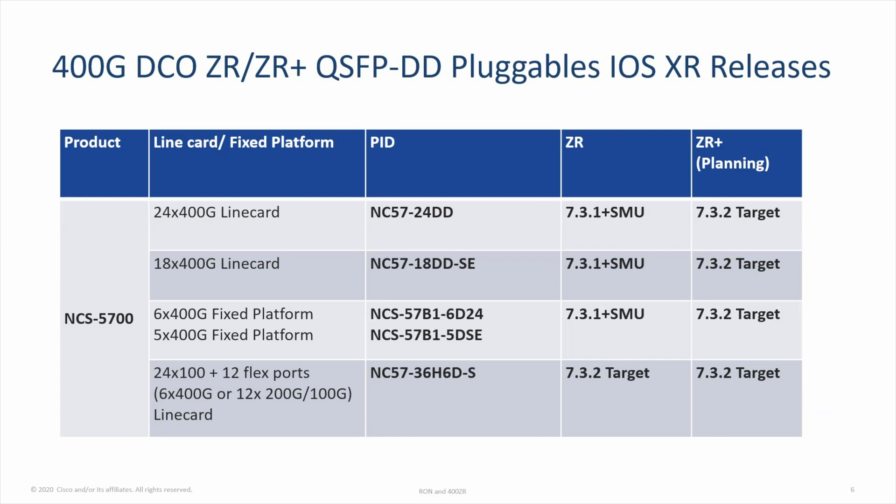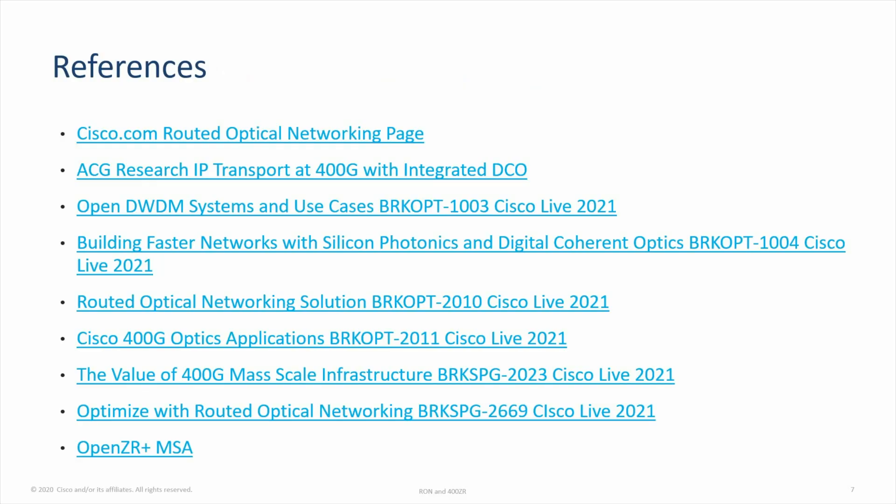In the current 7.3.1 release, the 400GB ZR will be supported first with the release of its SMU. In the next XR 7.3.2 release, we plan to support the 400GB ZR Plus as well. These are some of the references on Cisco.com and the recent Cisco Live 2021. Enjoy your reading.